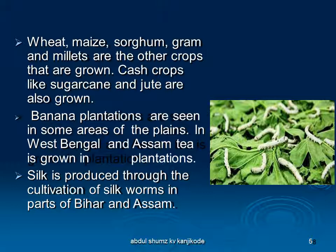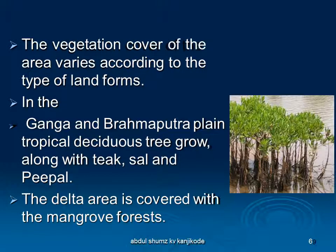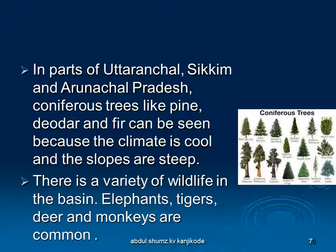Talking about the vegetation, the cover varies according to the type of landform. In the Ganga and Brahmaputra plains, we see tropical deciduous forests — trees like teak and sal grow here. In the Brahmaputra plain, thick bamboo groves are found. The delta area is covered with mangrove forest. In Uttarakhand, Sikkim, and Arunachal Pradesh, coniferous trees like pine, deodar, and fir grow, as the climate there is very cool.